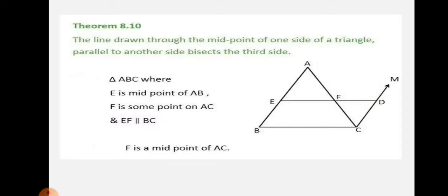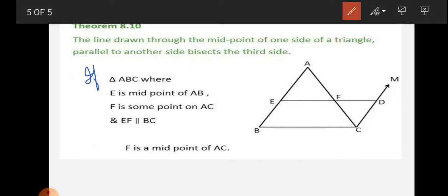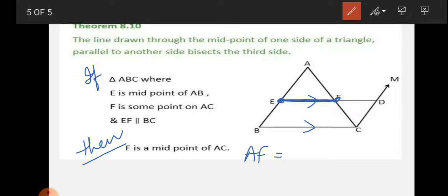Theorem 8.10 — Converse of the Midpoint Theorem: The line drawn through the midpoint of one side of a triangle, parallel to another side, bisects the third side. That is, in triangle ABC, if E is the midpoint of AB, F is some point on AC, and EF is parallel to BC, then by the converse of the midpoint theorem, F is the midpoint of AC, meaning AF equals FC.